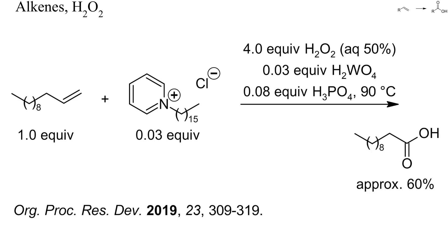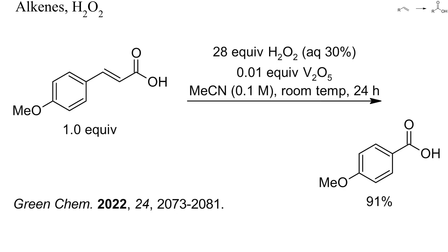One of the most convenient oxidants is hydrogen peroxide. In combination with tungstate, manganese, or vanadate, many functional groups will be oxidized by this reagent. Here, dodicene was oxidized to undecanoic acid with an excess of hydrogen peroxide, 3% of tungstate, a phase transfer catalyst, and a small amount of phosphoric acid. Also cinnamates can be cleaved with hydrogen peroxide; the solvent was acetonitrile and the oxidation already proceeded at room temperature.